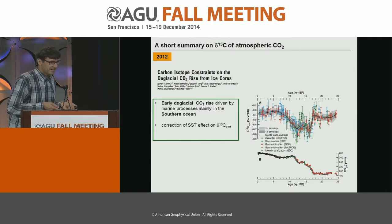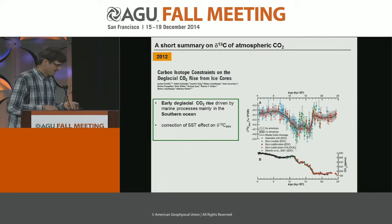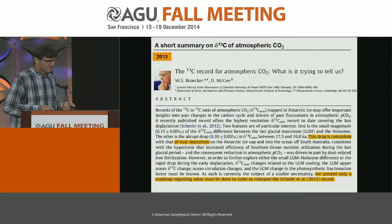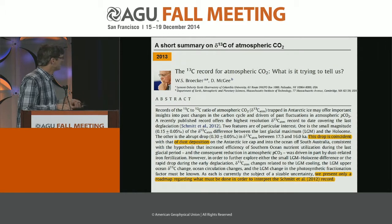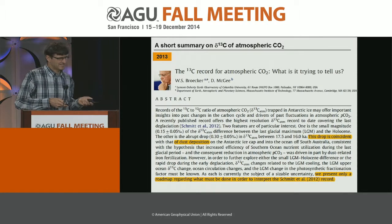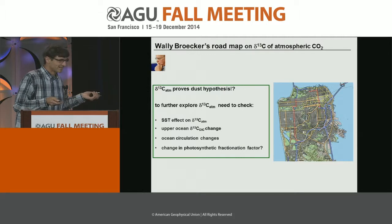A few years later, we extended this record through the deglaciation. The main result was that the initial rise and the rapid drop in carbon isotopes are due to Southern Ocean processes — upwelling, to make a long story short. Again, Wally Broecker said the carbon cycle is way too complex for such a simple statement. He said we present only a road map of what must be done to interpret this record — admitting it's complicated — but pointed to dust as a likely factor.